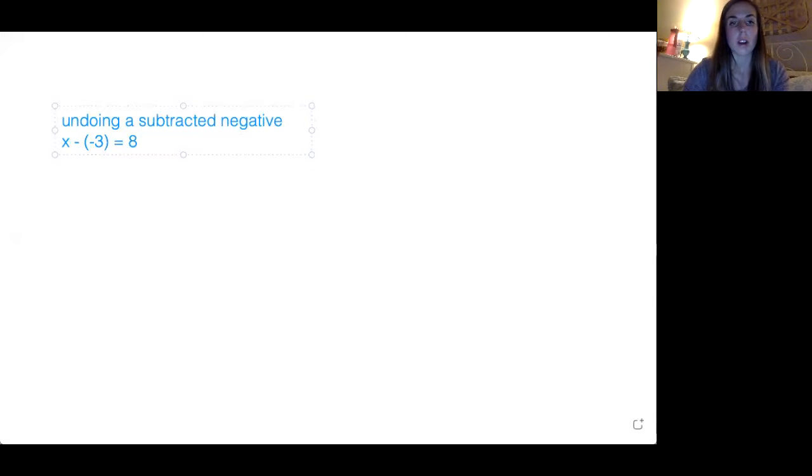Let's do our first example here that your book gives you, which is involving undoing a subtracted negative. Okay, here's our example. X minus negative three equals eight. Okay, this is our equation that they give us. They would like for us to solve it.